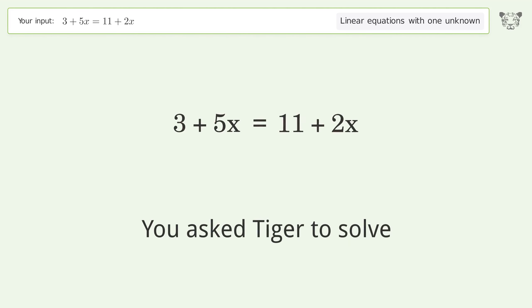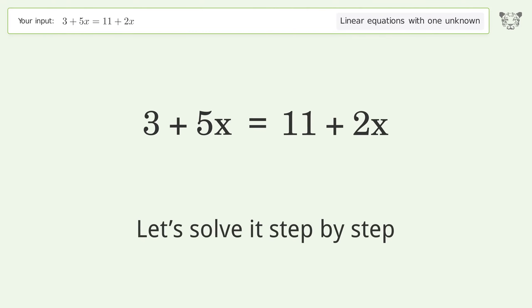You asked Tiger to solve. This deals with linear equations with one unknown. The final result is x equals 8 over 3. Let's solve it step by step.